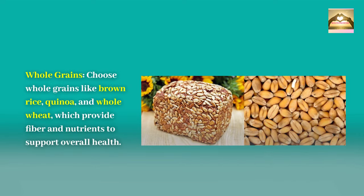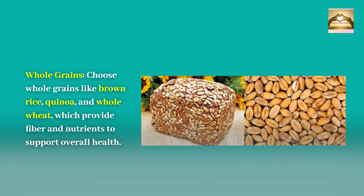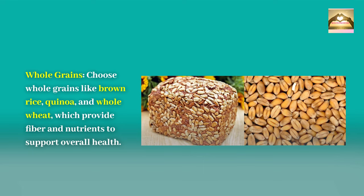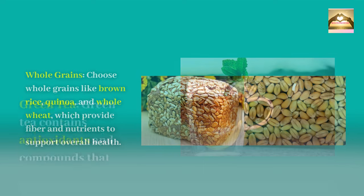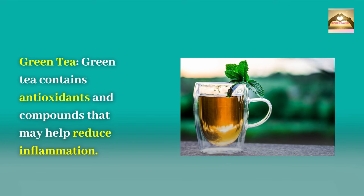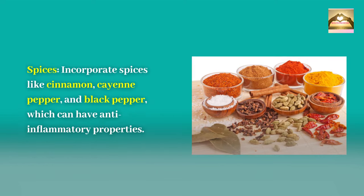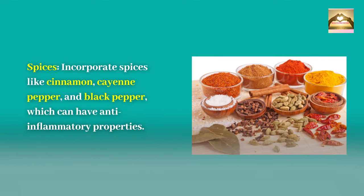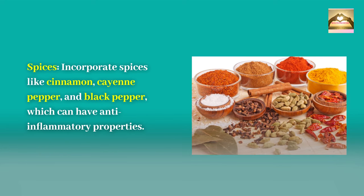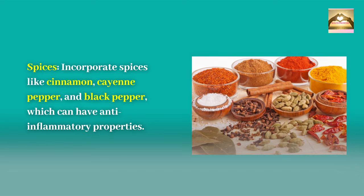Whole grains: choose whole grains like brown rice, quinoa, and whole wheat, which provide fiber and nutrients to support overall health. Green tea contains antioxidants and compounds that may help reduce inflammation. Spices: incorporate spices like cinnamon, cayenne pepper, and black pepper, which can have anti-inflammatory properties.